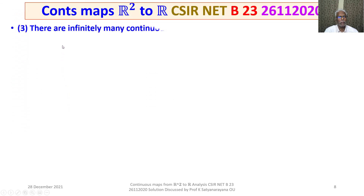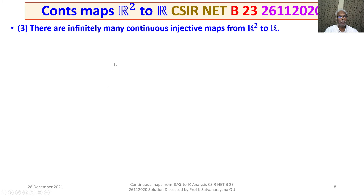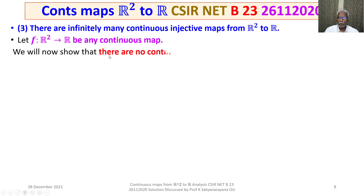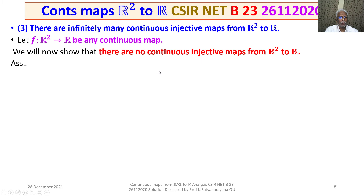Let us consider the statement given under option 3: there are infinitely many continuous injective maps from R square to R. Let F be any continuous map from R square to R. We will now show that there are no continuous injective maps from R square to R. For this, assume that F is injective.